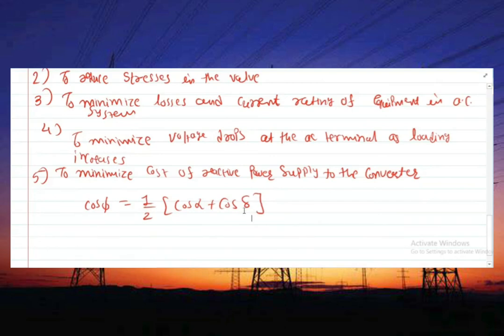The rectifier however has a minimum limit of alpha about 5 degrees to ensure sufficient voltage across the valve before firing. In inverter it is necessary to maintain a certain minimum extinction angle to avoid commutation failure. Typically the value of gamma with a safe margin is 15 degrees for 50 Hz system and 18 degrees for 60 Hz system. These are the main reasons for maintaining the power factor.